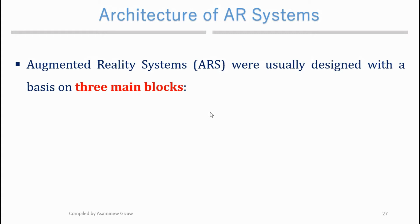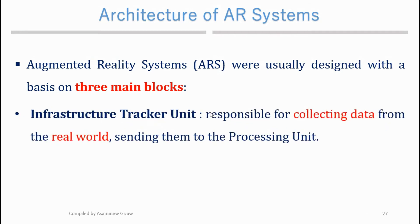The first component is the infrastructure tracker unit. This unit is responsible for collecting data from the real world and sending that data to the processing unit. This module can collect data from the environment using different sensors and pass those data over a network to the processing unit.